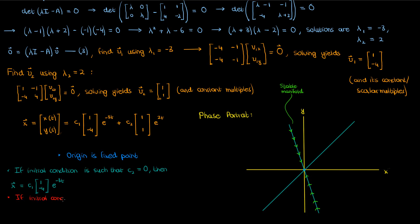On the other hand, if c1 = 0 so the first component vanishes, the solution lies along the second eigenvector and diverges in a straight line away from the origin. The line spanned by the second eigenvector is effectively the unstable manifold — starting anywhere on it, the trajectory diverges away from the fixed point. Equivalently, trajectories on the unstable manifold would converge to the fixed point if time were reversed.